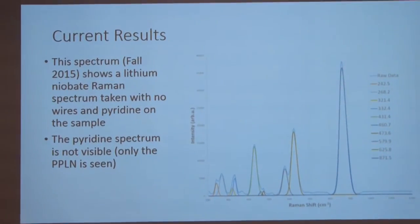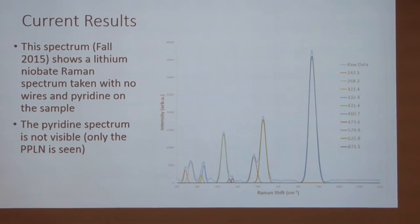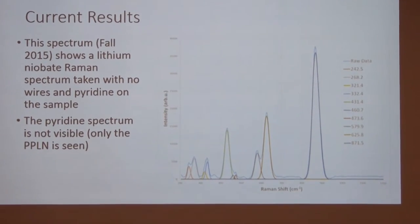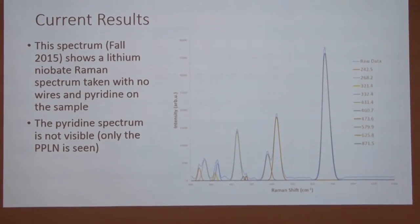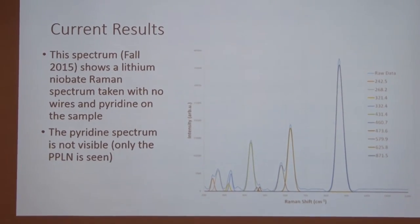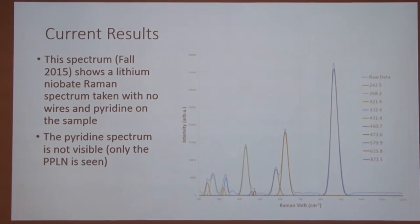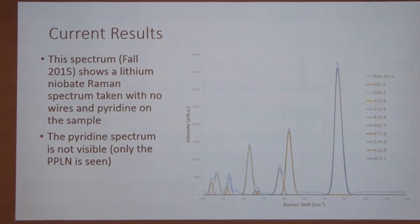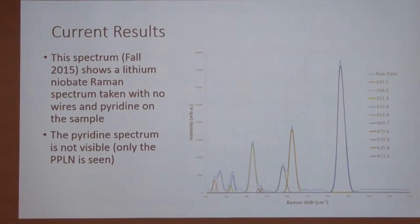And so, if we do that, this is the kind of data that we'll actually get back. We'll get a bunch of peaks. Those peaks are the shifts in the frequency from that Raman scattering. And this particular spectrum was taken from a sample that didn't have any wires on it. There's no wires. There's just lithium niobate. And that's the signal that you're seeing. But we also put the pyridine on this sample. But we can't see any pyridine signal.